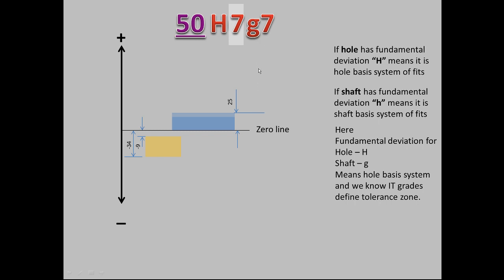Similarly, for the shaft, if we change from G7 to G8, the lower deviation changes to minus 48 microns instead of minus 34 microns. The upper deviation remains the same at minus 9 microns.